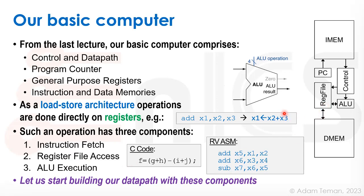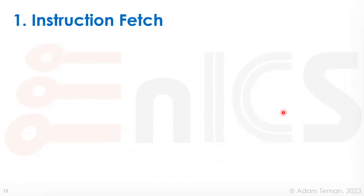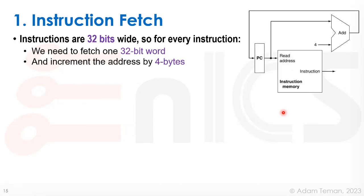Let's start building our data path. First, instruction fetch: instructions in RISC-V are all 32 bits wide, so for every instruction we fetch one 32-bit word. The program counter provides the address to read from instruction memory, bringing out our instruction. It then moves to the next instruction, which is 32 bits — or four bytes — later. So the PC also feeds an adder that adds the constant four, writing the result back into the program counter.